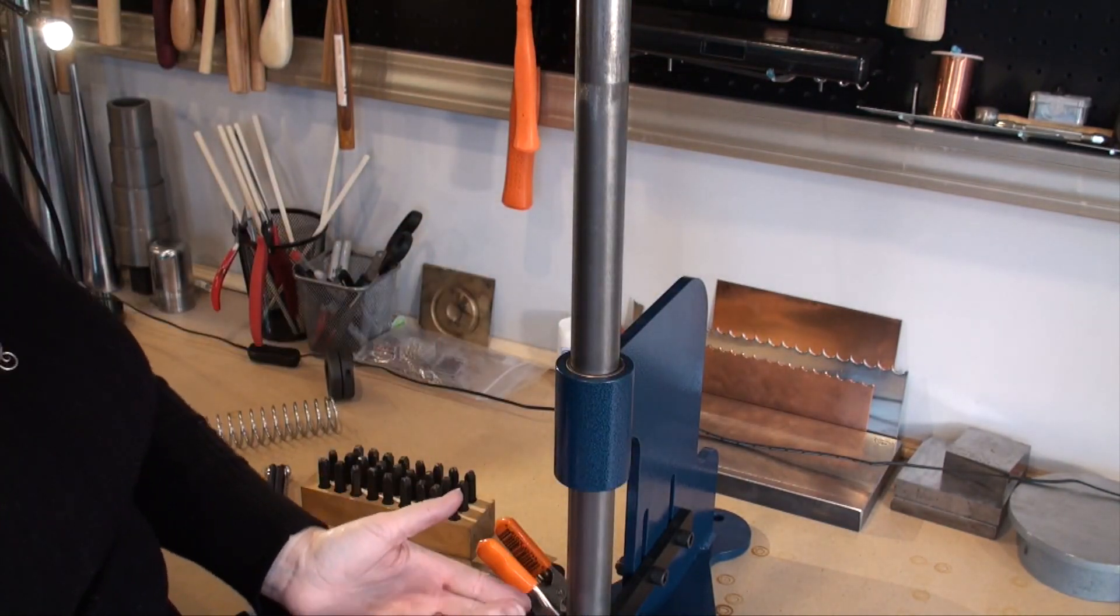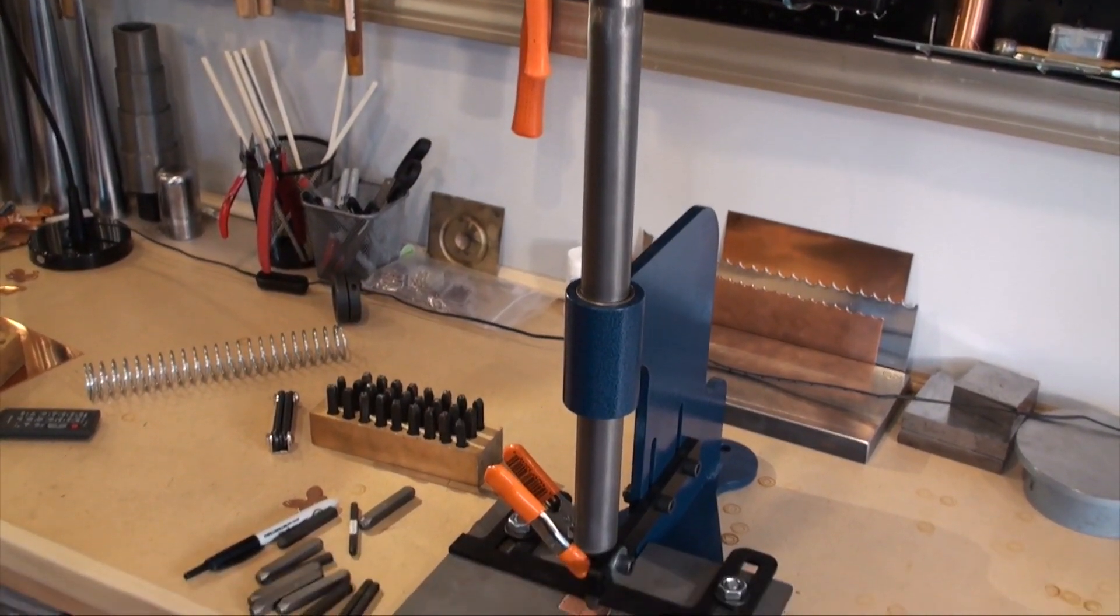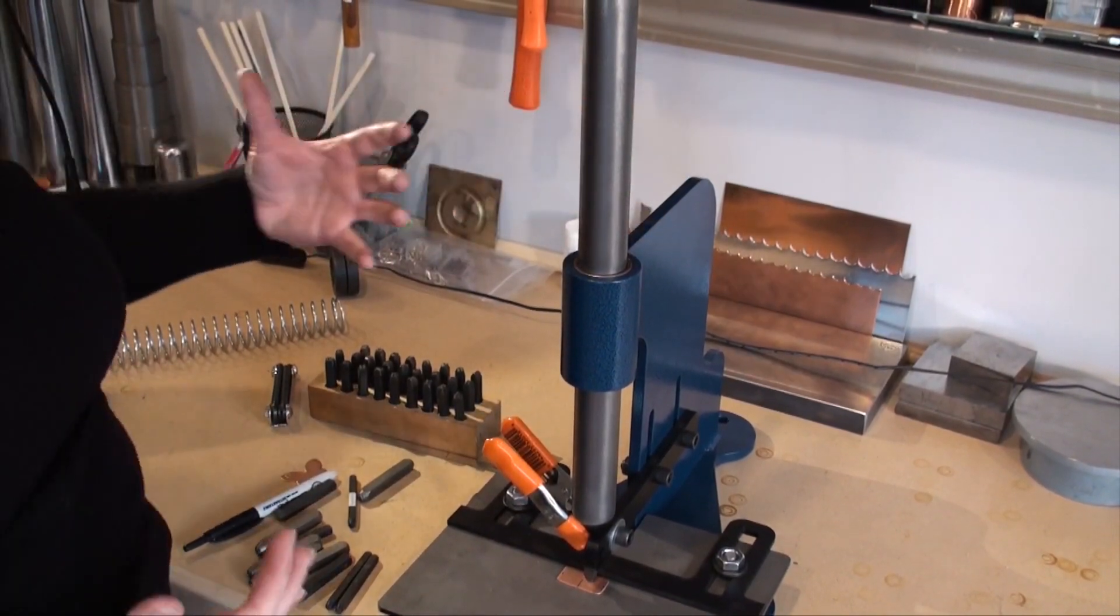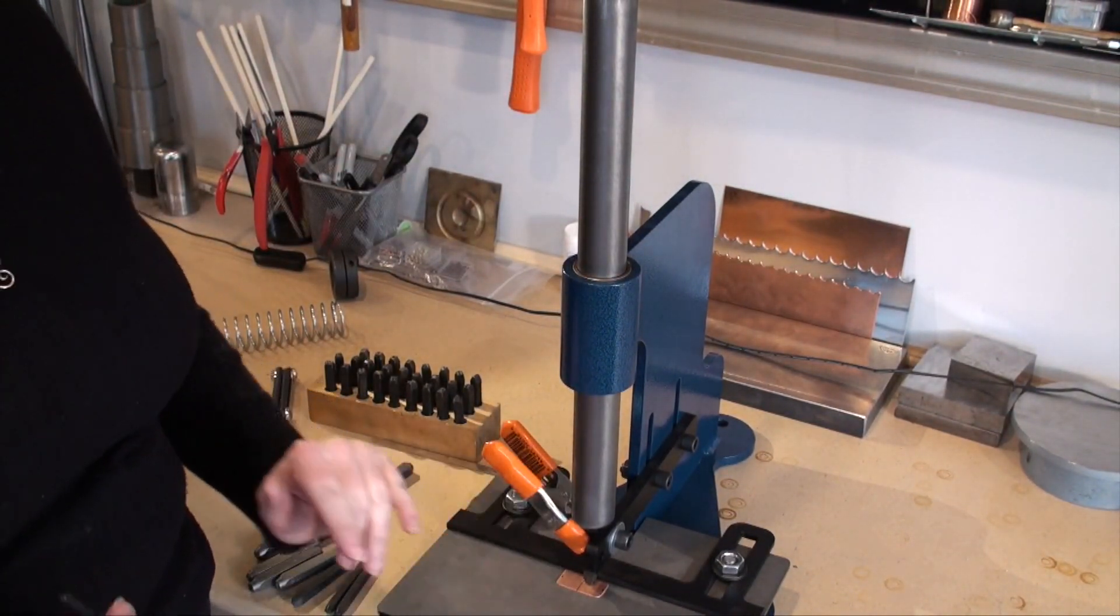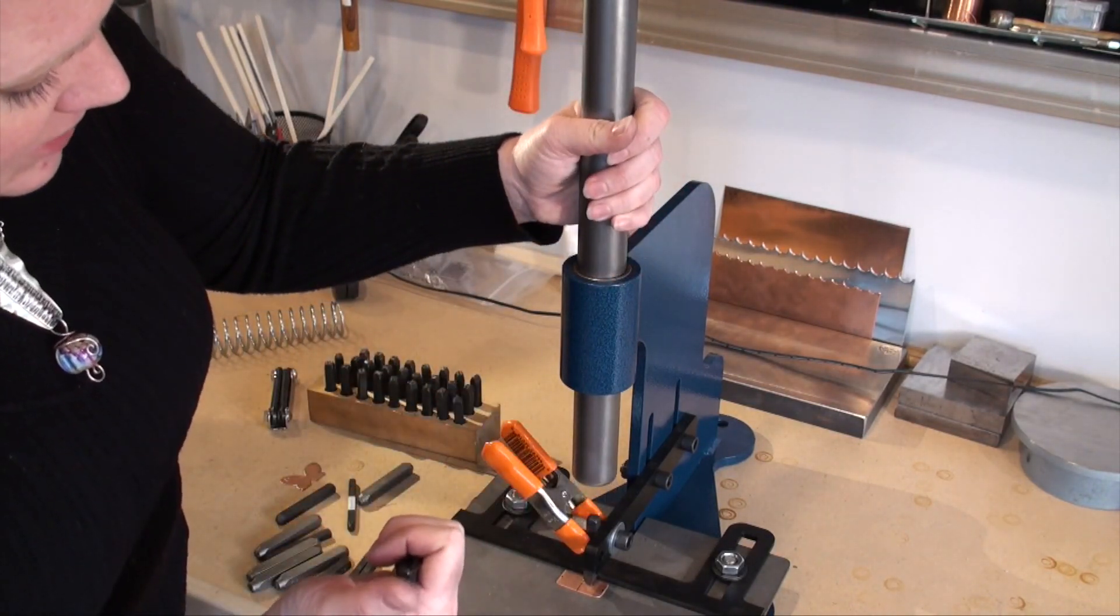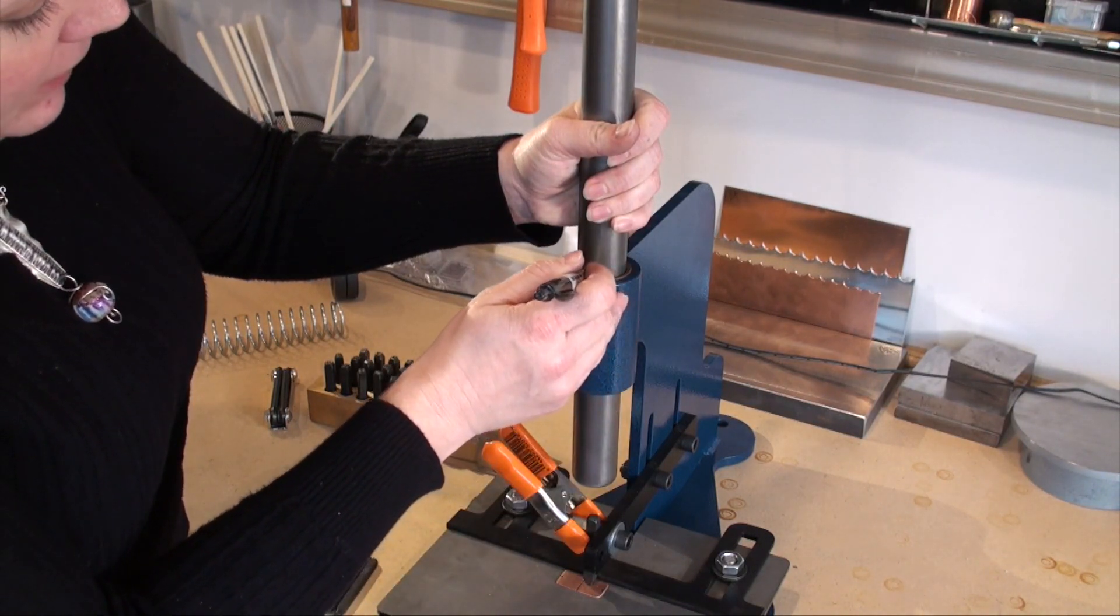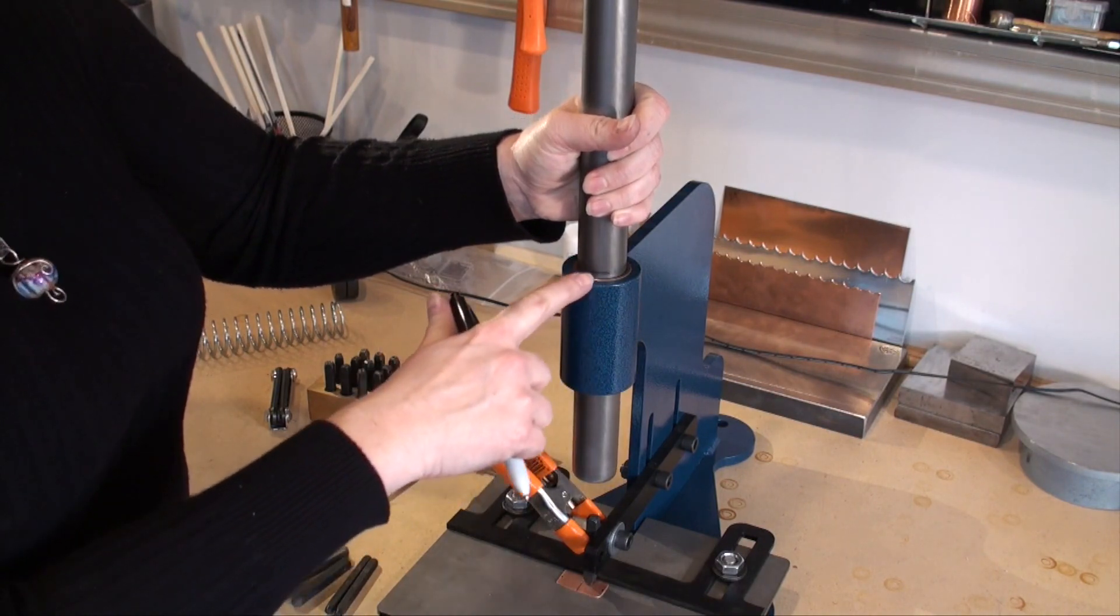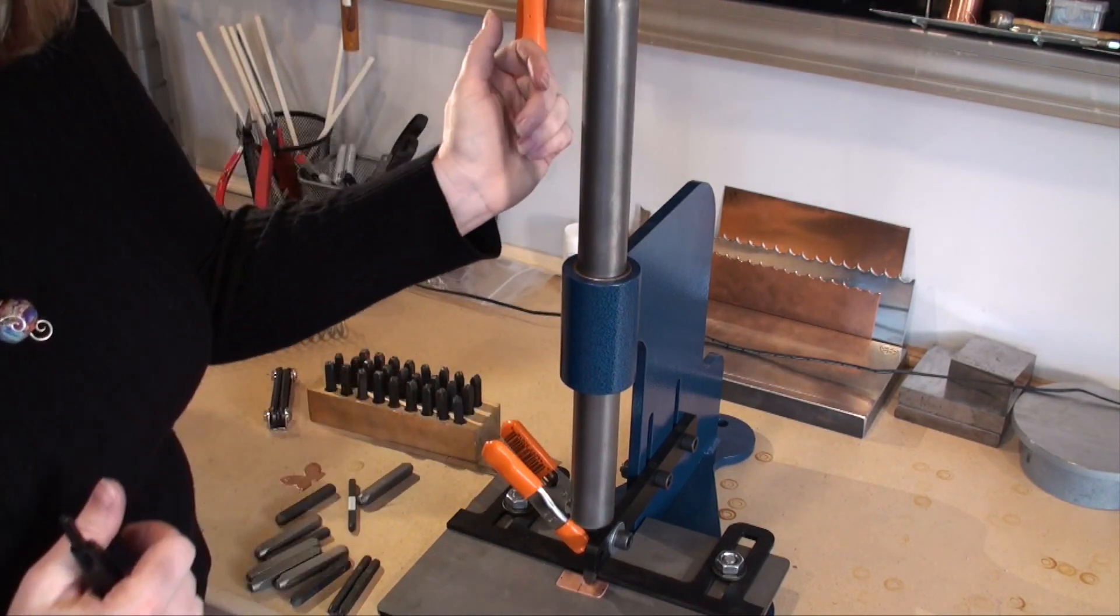Now right now it's setting down on top of my stamp. See if you can see that here. So right now it's just resting on top of my stamp. Let's say that I want to drop this and have it give me the same impression every time. So what I would do is I'm going to lift this to whatever height I'm after, and I'm just going to use a Sharpie and mark right here on my bar at the point where I'm going to lift this up and drop it.